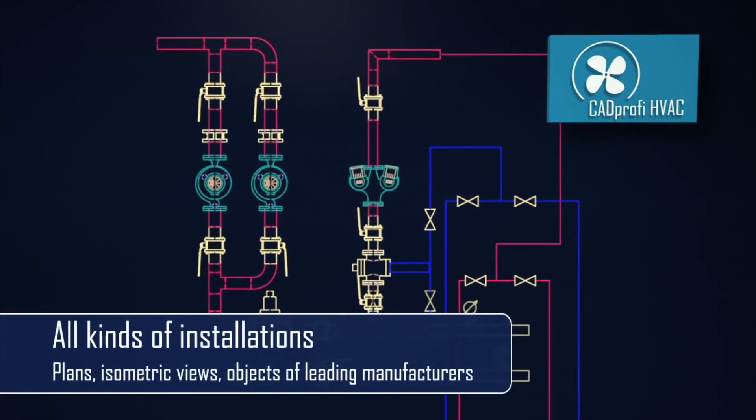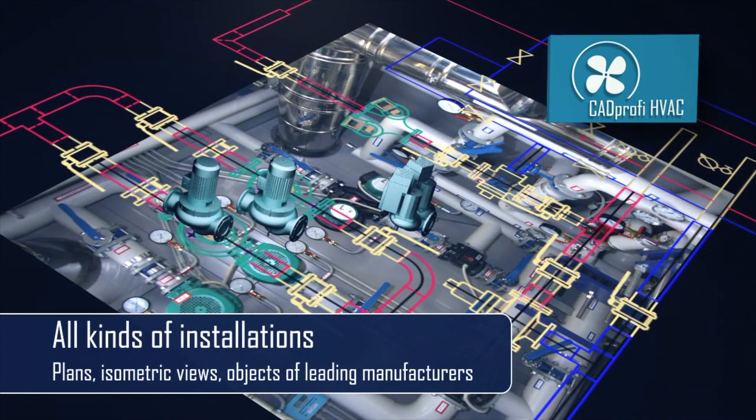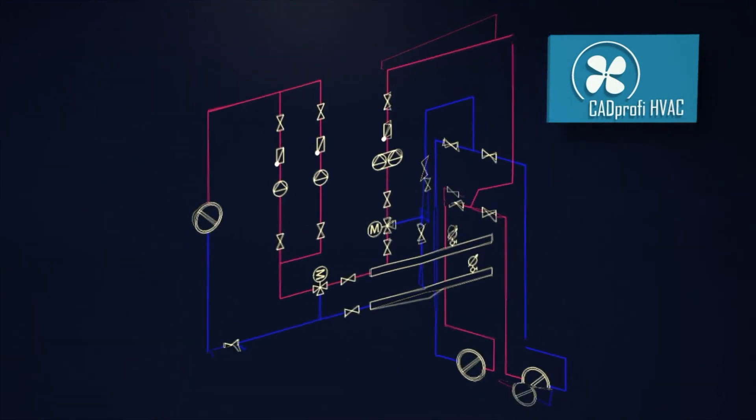We have four modules for disciplines like mechanical, architectural, electrical, and HVAC and piping. The whole package is called CAD Profi Suite. You can buy it all or one module for one discipline if you wish.